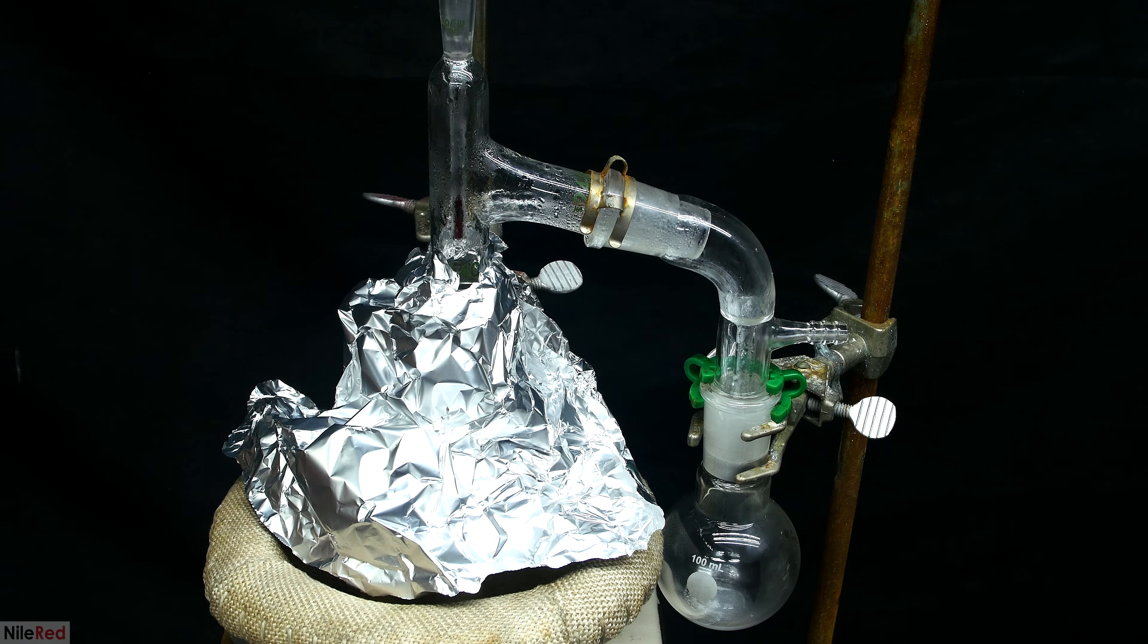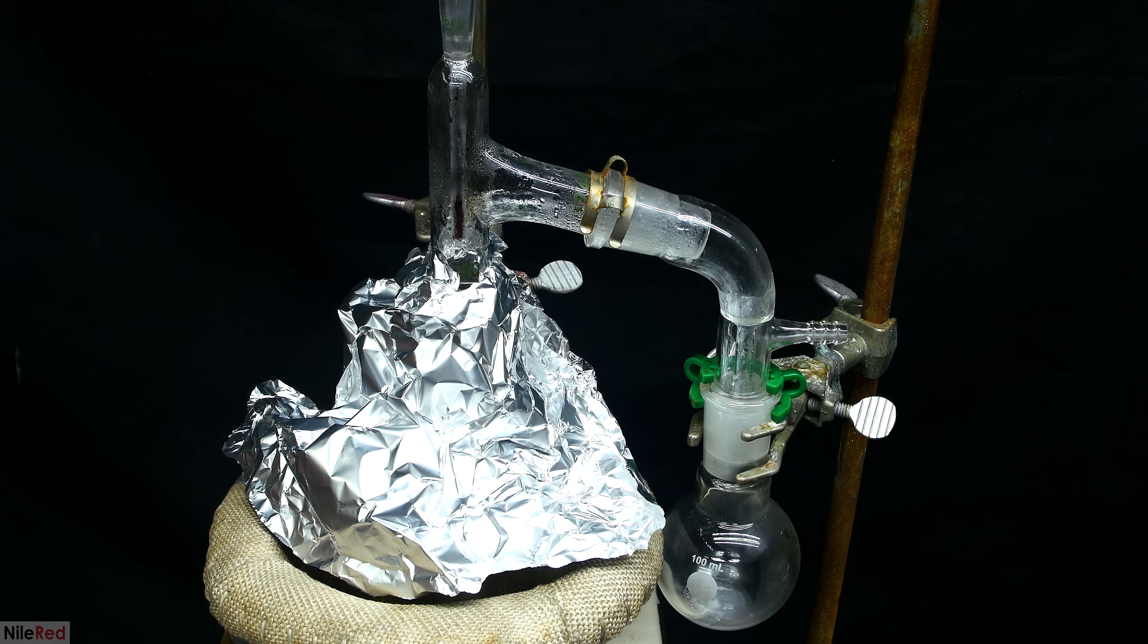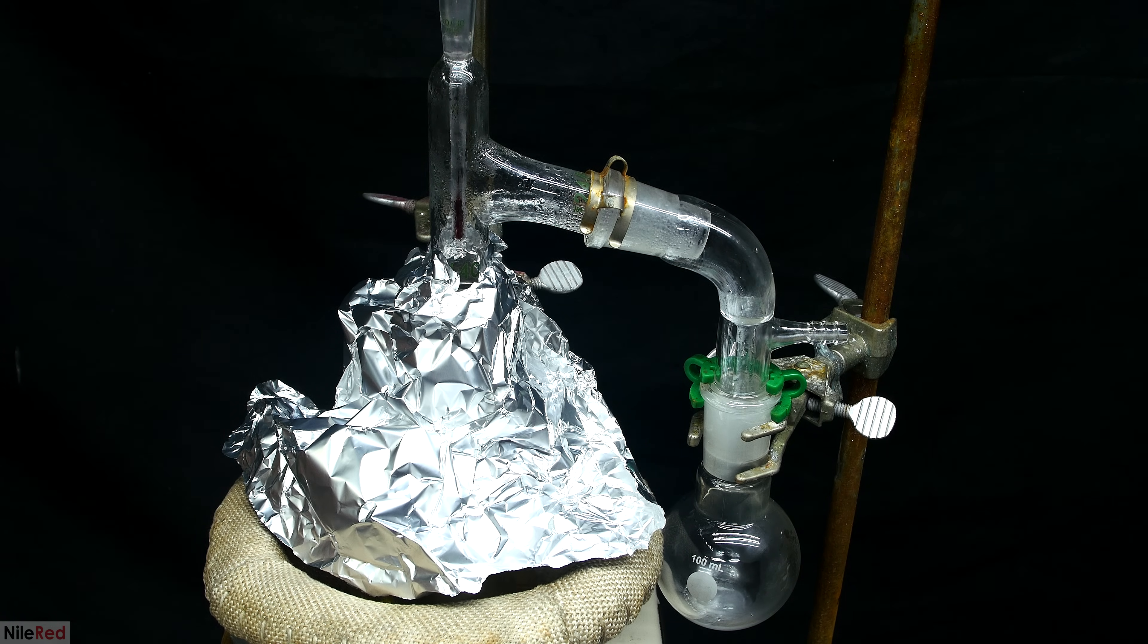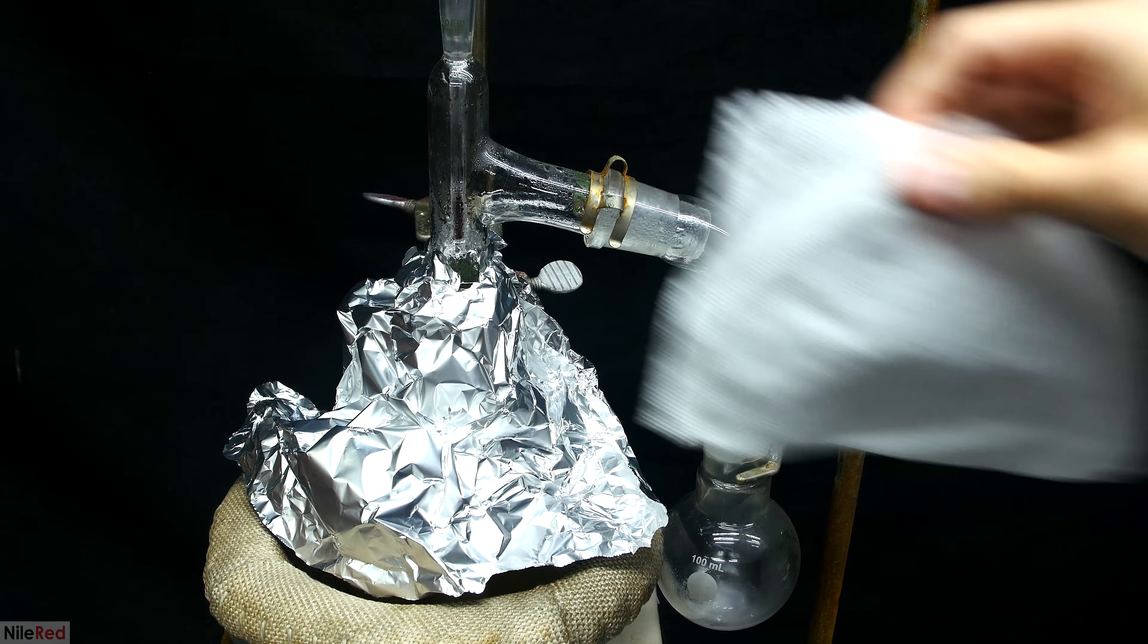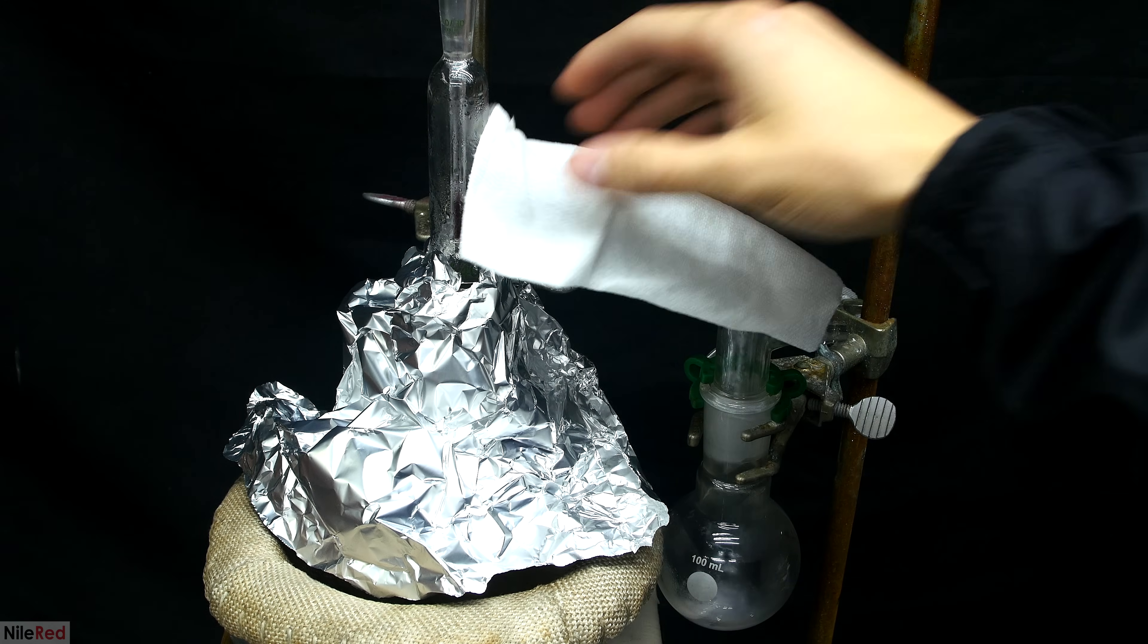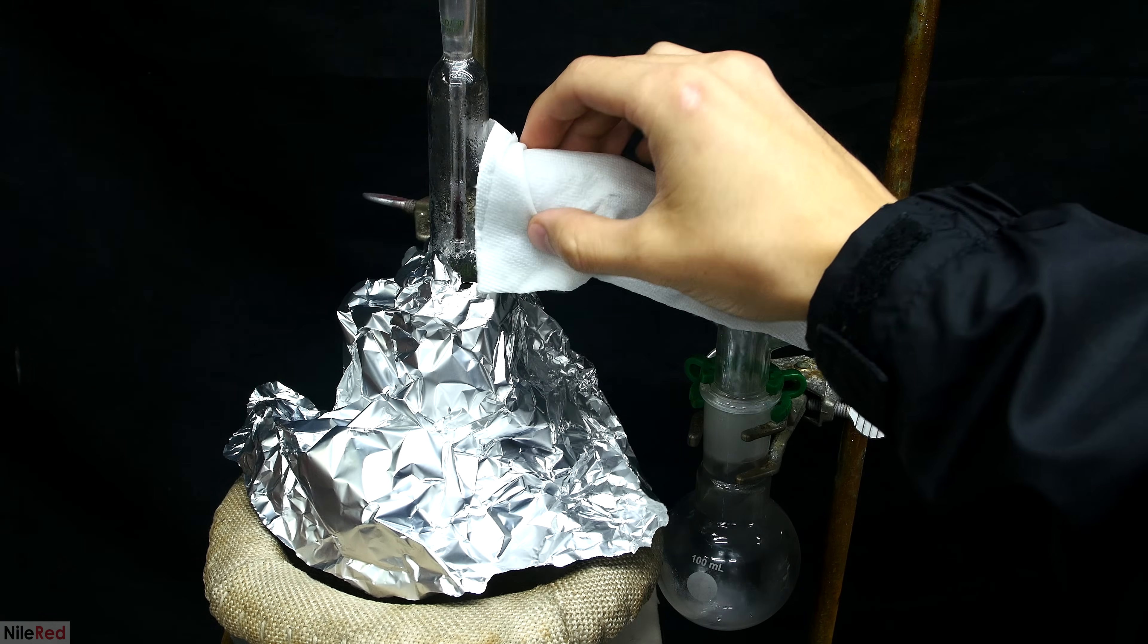You'll also notice that I covered the distillation flask with aluminum foil, and this just serves to keep things hot. I found that when I didn't use the aluminum foil, the phenol had a really hard time making it over. To help keep the apparatus cool, it's really useful to add some damp paper towel.